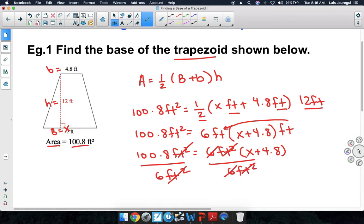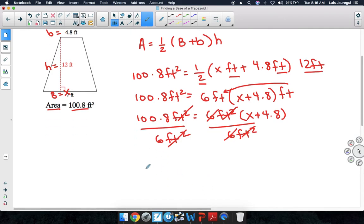And then we're going to divide 100.8 by 6, which happens to be 16.8. So let's write that down. 16.8 equals x plus 4.8. Now remember, our goal is to get the x by itself. So let's subtract 4.8 from both sides of the equation.